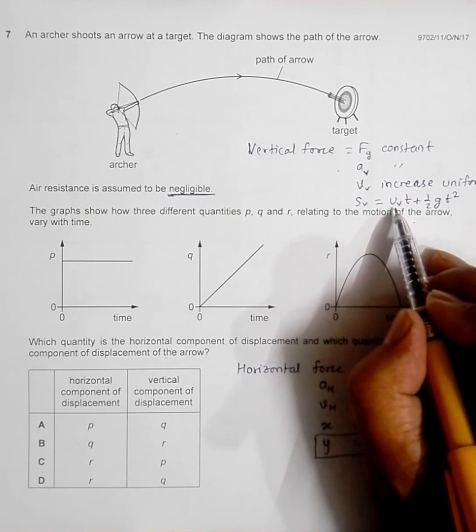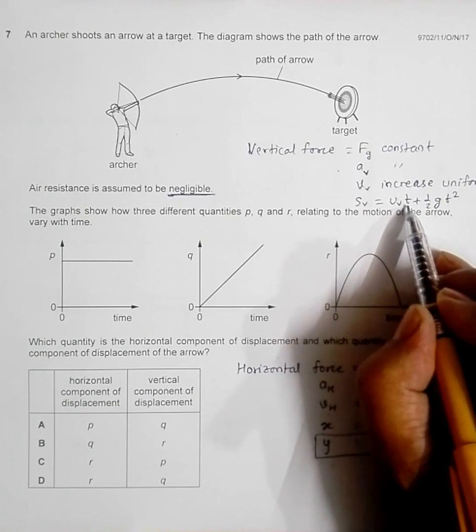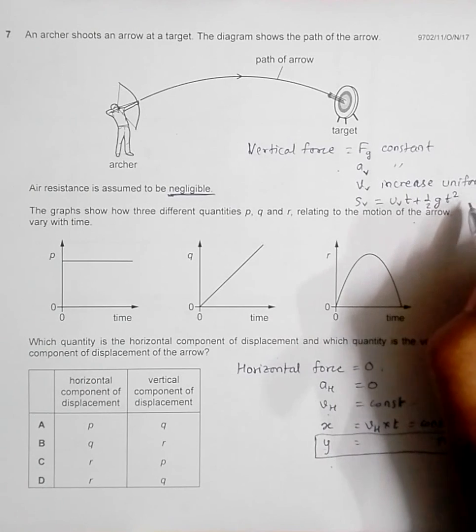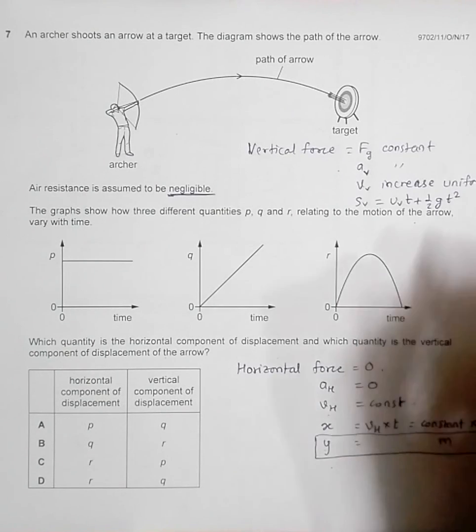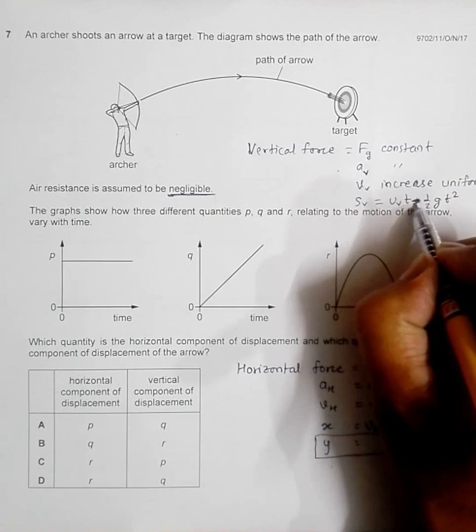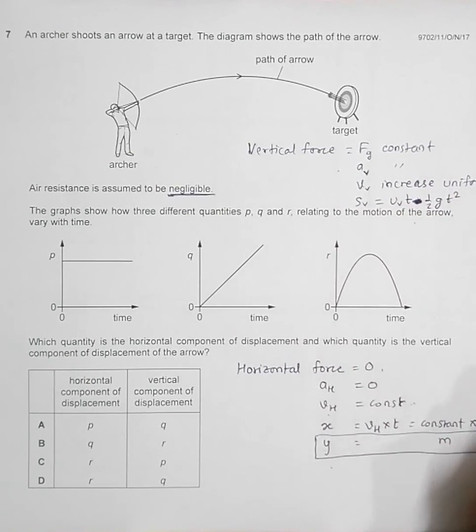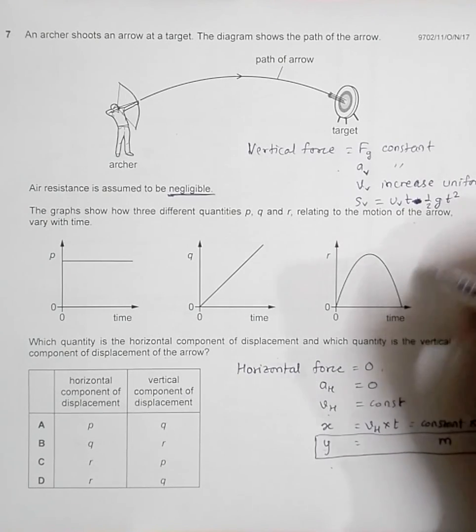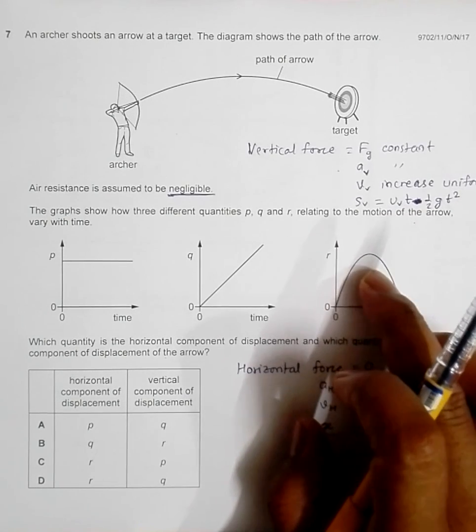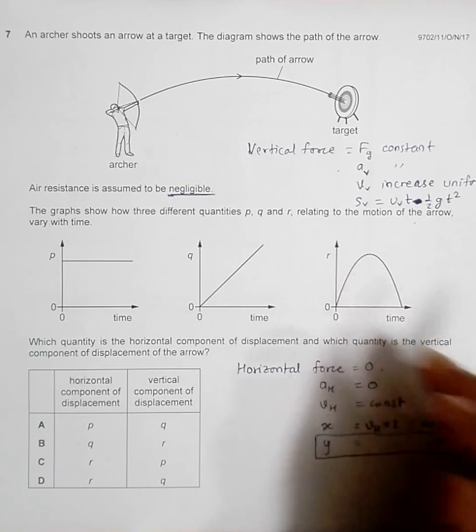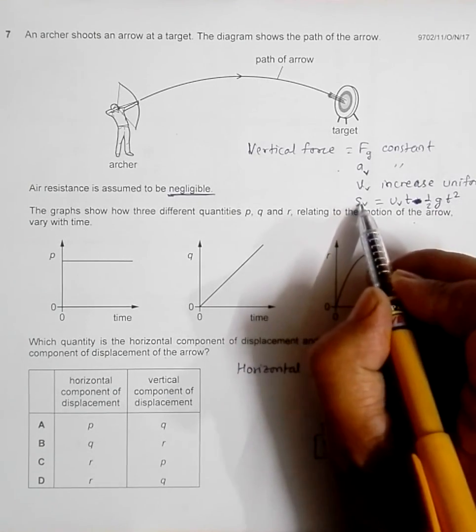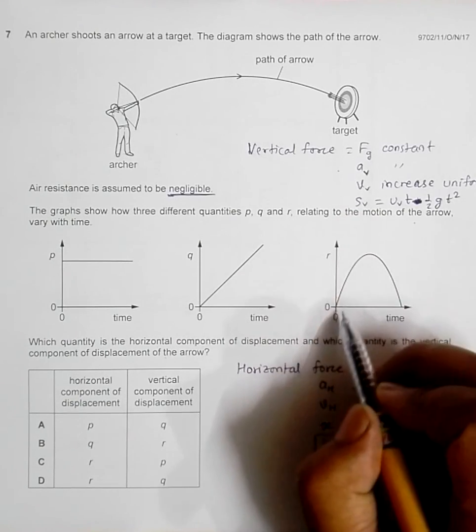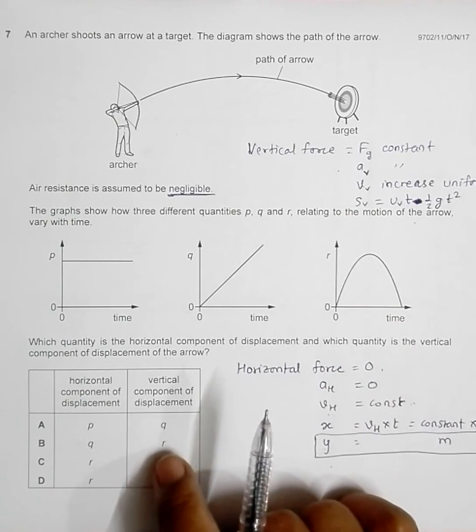U vertical is constant times time plus half G T square. This will be a parabolic path. Since it is going up, the value of G should be negative, and this will give a reverse parabola. So this should be graph R, which is the vertical displacement, and this is in choice B.